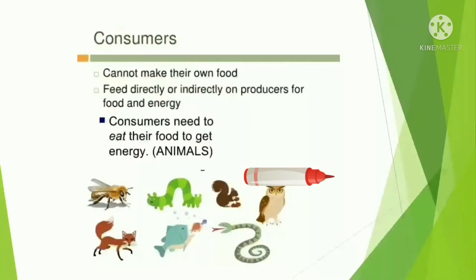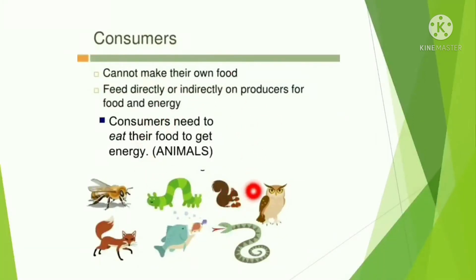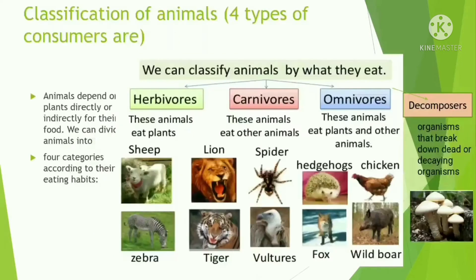Consumers are organisms who eat something or use something that is produced by another organism, because they cannot make their own food. Consumers feed directly or indirectly on producers for food and energy. All animals are consumers — like the bee, the snake, the squirrel, and the owl.